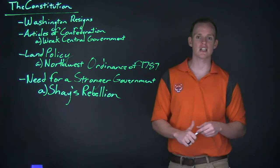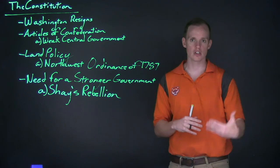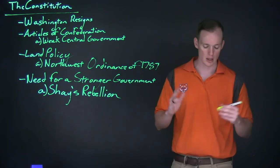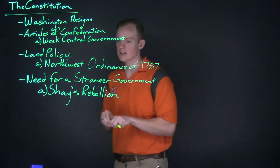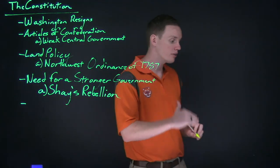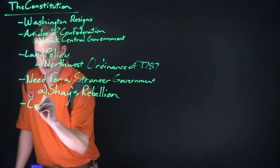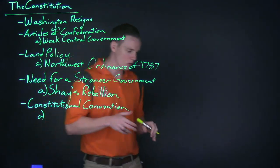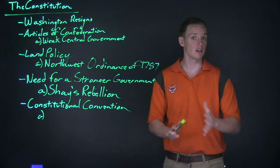By early 1787, there was another call to the states for a new convention to be convened in Philadelphia to discuss whether they should have a stronger government — whether to create a new constitution or revise the Articles of Confederation. When these individuals met at the convention, they were under the belief that they would merely revise the Articles. However, very early on it became clear to many delegates that the Articles were inadequate and they needed to write a new system entirely. And so it became known as the Constitutional Convention.